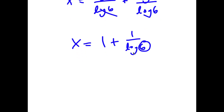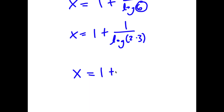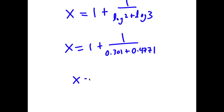And now log 6, I'm going to write this as log of 2 times 3. So this is going to equal 1 plus 1 over log 2 plus log 3. Now log 2 is 0.3010 and log 3 is equal to 0.4771. So if I add these two together, I get x is equal to 1 plus 1 over 0.7781.